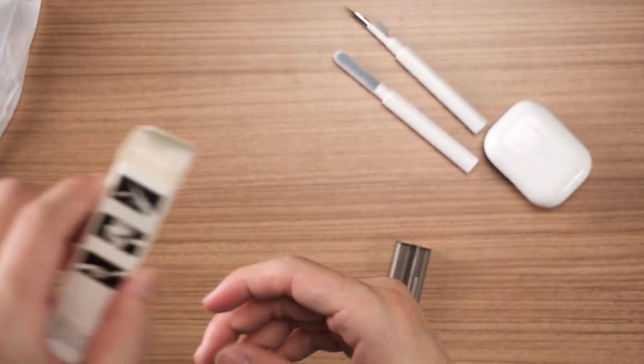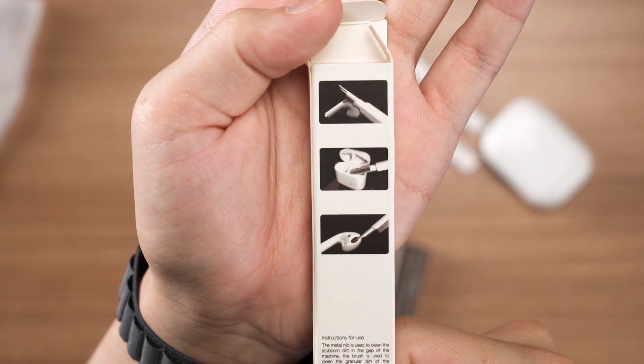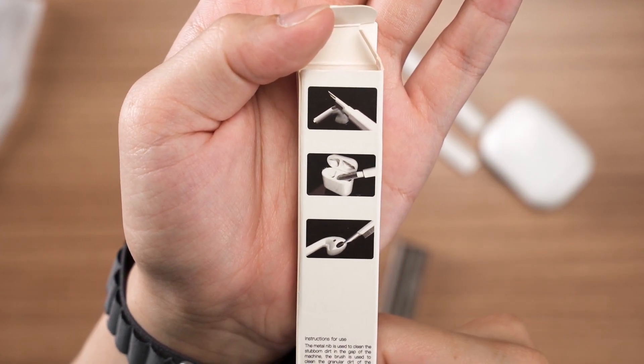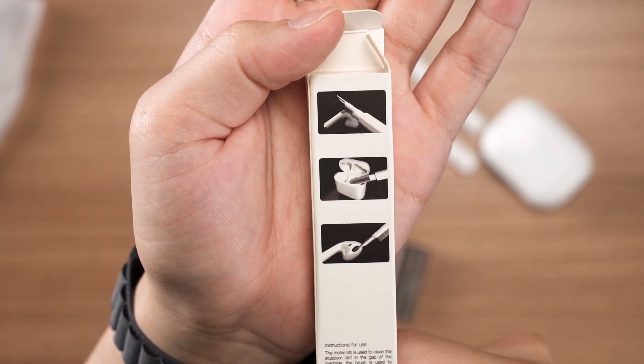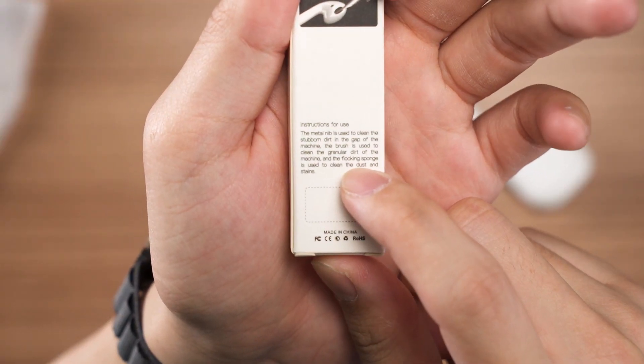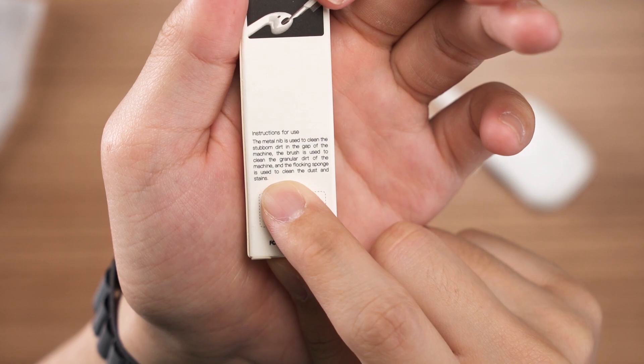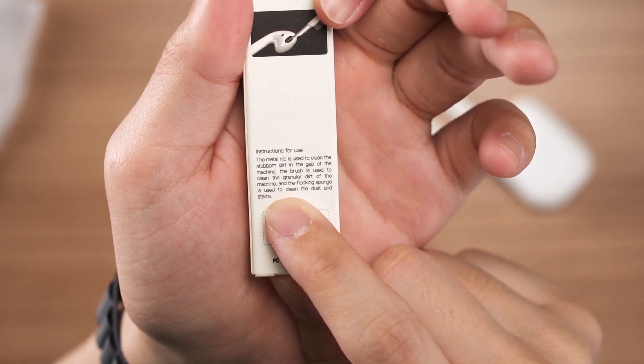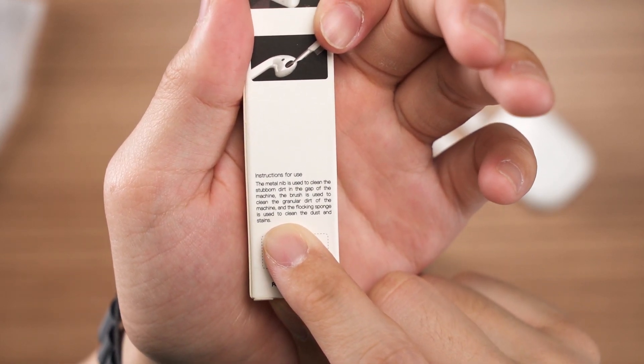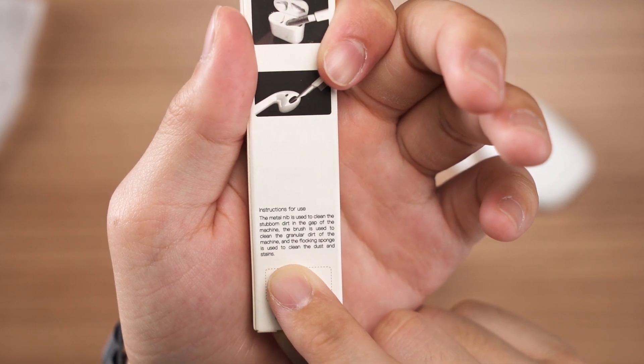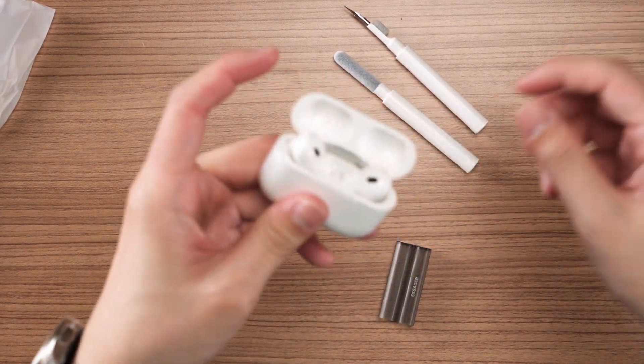According to the box, that's pretty much the whole user manual, I guess. They say the brush on the side here is actually to clean the granular dirt of the machine and the flocking sponges for you to clean the dust and stain. That's a weird way to put it.